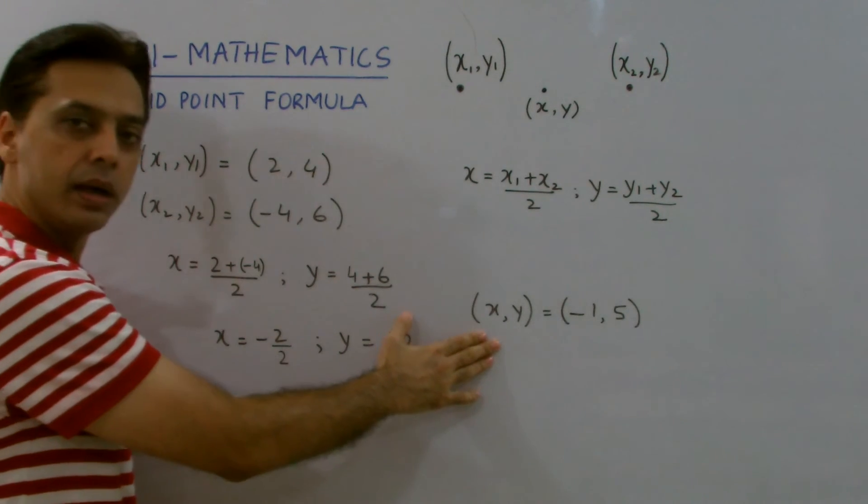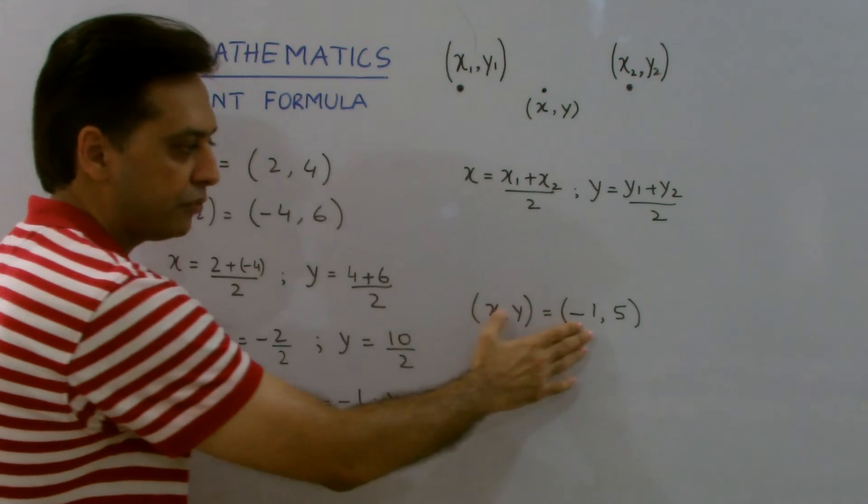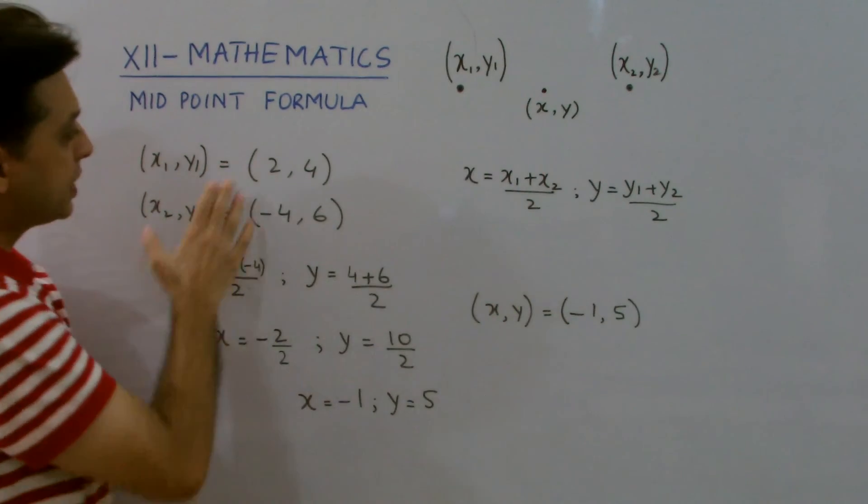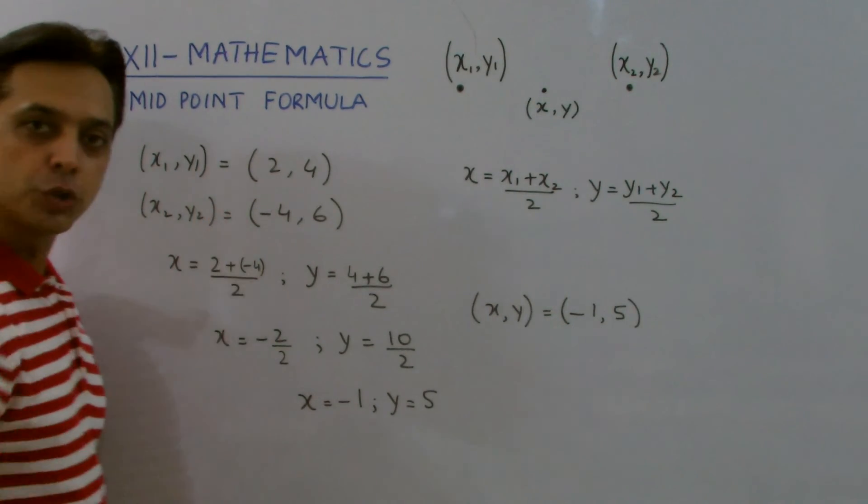This is the required midpoint (-1, 5) between the assumed values of (x1, y1) and (x2, y2).